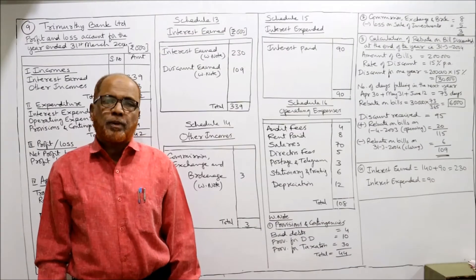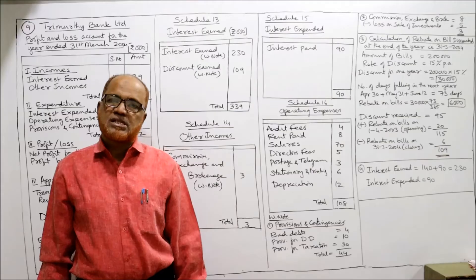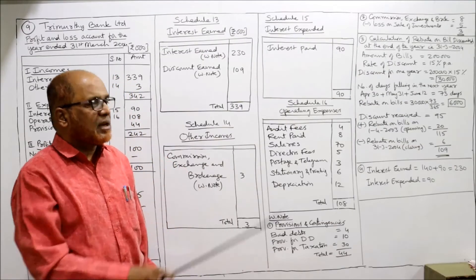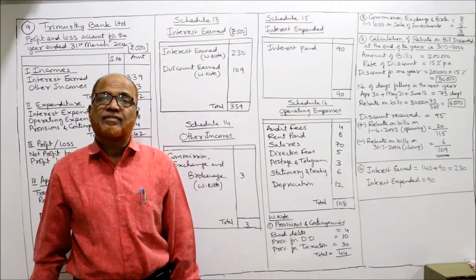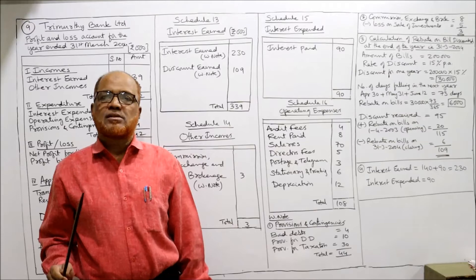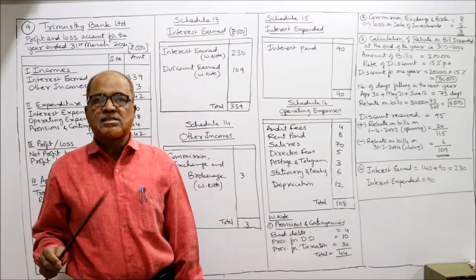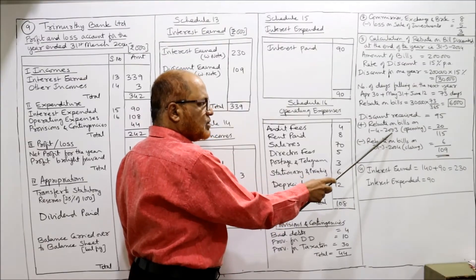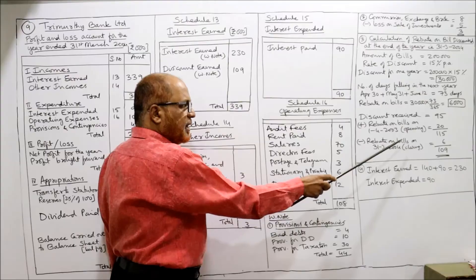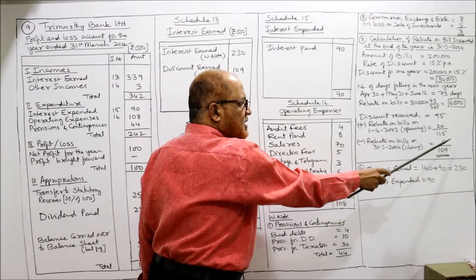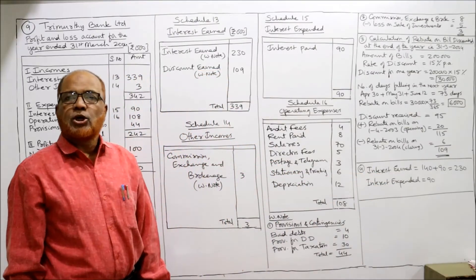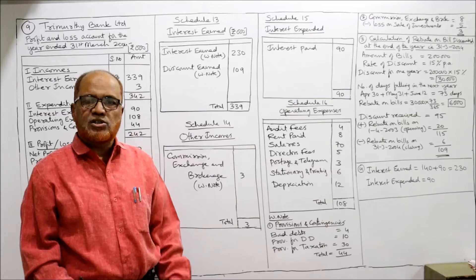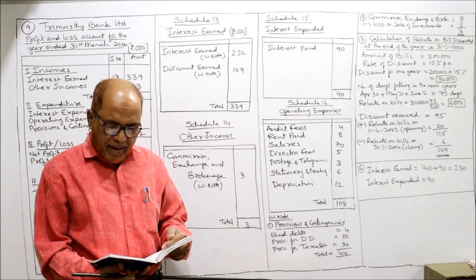This closing rebate of 6,000 is not directly given in the problem — we calculated it. The opening rebate given in the problem is 20,000. Discount on bills is 95,000. So: discount received 95 plus opening rebate 20 minus closing rebate 6 equals 109. The discount earned during the year is 109. I have written in the working note: discount earned = 109. That is the new point in this problem.